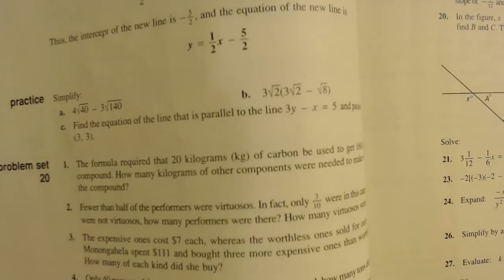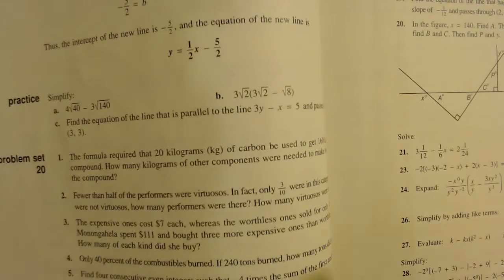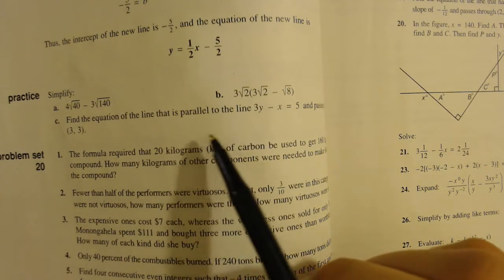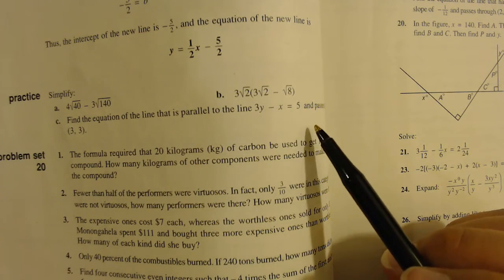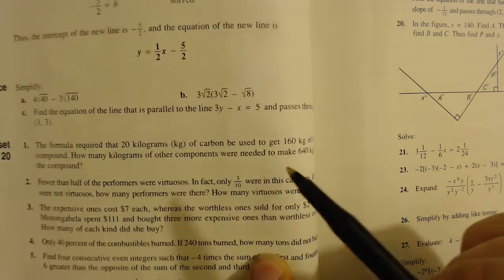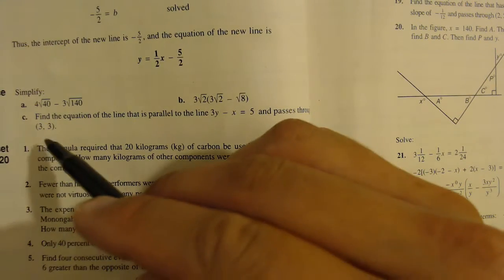Last, we're going to practice C. We have to find the equation of the line that is parallel to line 3y minus x equals 5, and also passes through the point 3, 3.